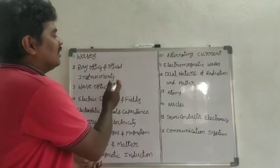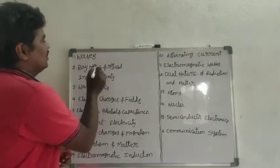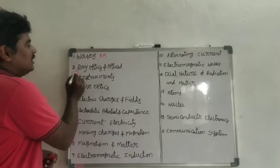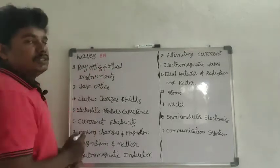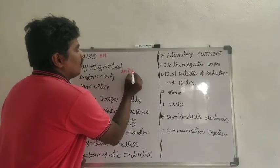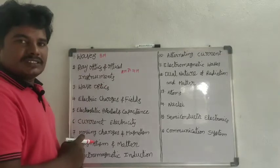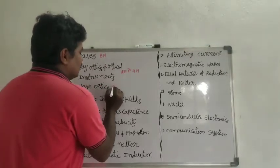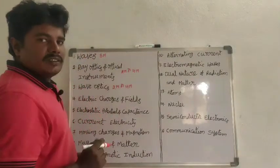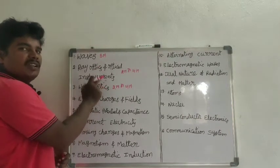What are the chapters in 12th class physics? The first chapter is waves—we get 8 marks from this chapter. The second one is ray optics and optical instruments—we get 2 marks or 4 marks questions. Third chapter is wave optics—here also we get 2 marks or 4 marks questions. If we get 2 marks from this chapter, we get 4 marks from that chapter or vice versa.